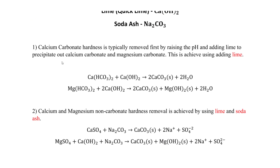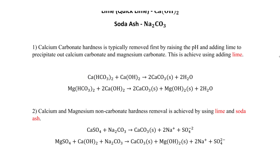Step one is to focus on carbonate hardness. We look at calcium carbonate hardness first — this is removed by raising the pH to around 10.3. Then we add lime to precipitate out calcium carbonate and magnesium carbonate. So we want to precipitate out the calcium.